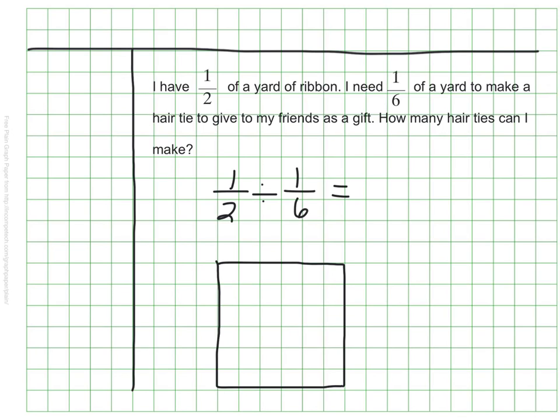Let's take a look at it. Here I have my whole, and that would represent a whole yard. But I only have half of a yard to start. I'm not starting with a whole yard, I'm starting with half of my yard, so I've shaded in half. I want to see how many sixths there are in that 1 half.